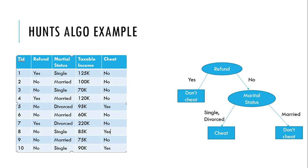A decision tree should be as small as possible. Why? Because the computation time will be reduced. If the decision tree is too tall, we have to pass a long route and that would take more time. So our goal is to build a decision tree which is as short as possible.